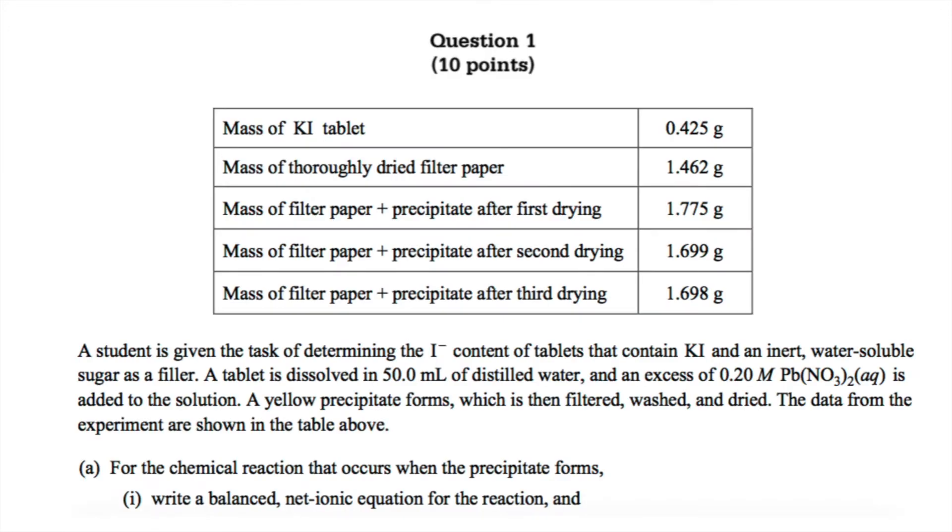This question says a student is given the task of determining the I- content of tablets that contain potassium iodide and an inert water-soluble sugar as a filler. A tablet is dissolved in 50 milliliters of water, and an excess of 0.2 molar lead-to-nitrate is added to the solution. A yellow precipitate forms, which is then filtered, washed, and dried. The data from the experiment are shown in the table above.